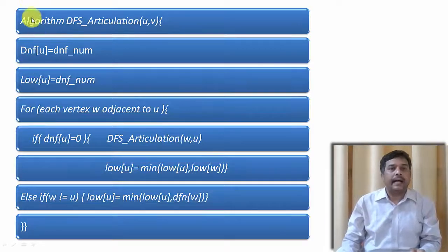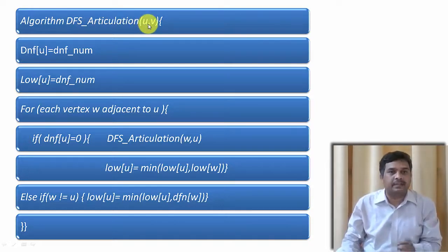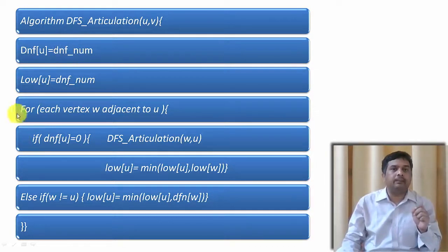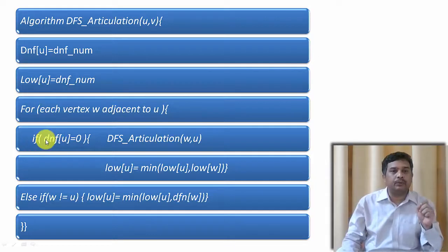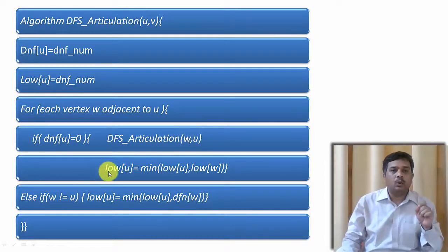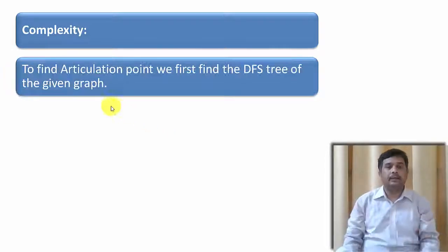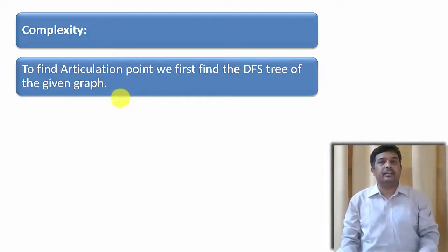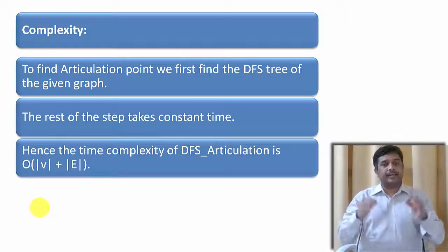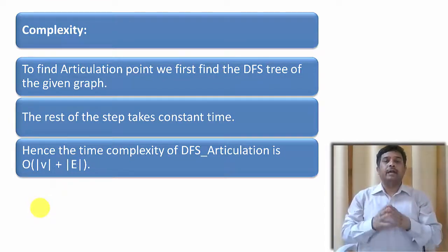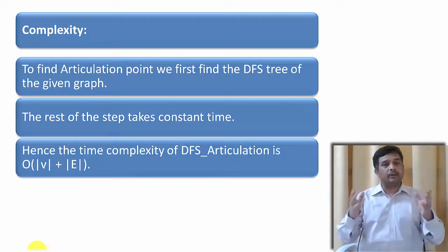Let us see the algorithm. The algorithm depth first search articulation takes u and v as two vertices given as parameters. We take dfn number of u as a number. Low of u is the dfn number. For each vertex w adjacent to u: if dfn of u equals 0, then we call depth first search again with w and u. And low of u becomes minimum of low of u and low of w. Otherwise, if w is not equal to u, then low of u equals minimum of low of u and dfn of w. If we run this particular algorithm, we will get all the articulation points. The complexity to find the articulation point: we first find the DFS tree for the given graph, and the rest of the steps take constant time. That is why the complexity is O of number of vertices plus number of edges in the particular graph.